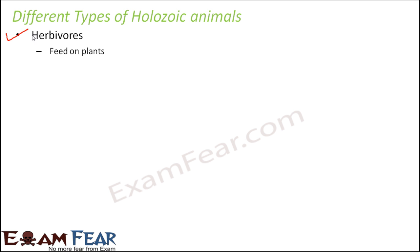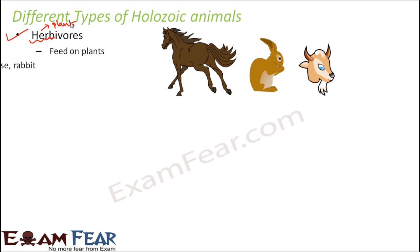The first type is herbivores. The term 'herb' means plants, so these animals feed only on plants. Examples include cow, goat, horse, and rabbit — they will only eat plant parts and will never eat any animal parts.